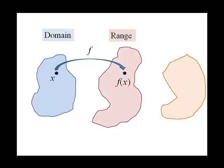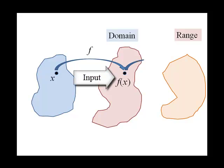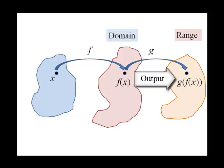Now what if we have another set? And now what was our range is now our domain and this new set is our range. Then we might have some other function taking f of x, which is now an element in our domain, to an element in our new range. Let's call that function g. So our output now is g of f of x.